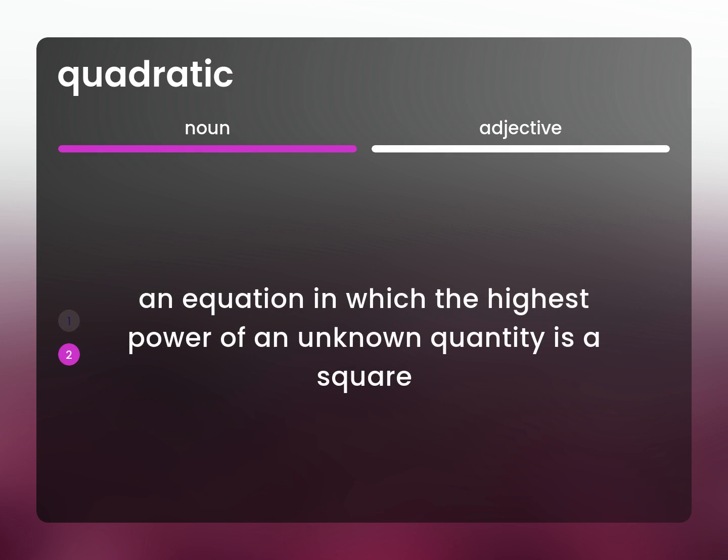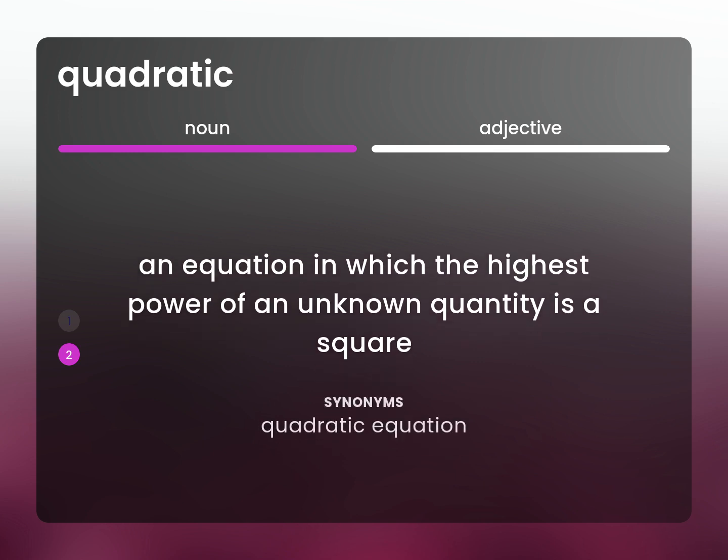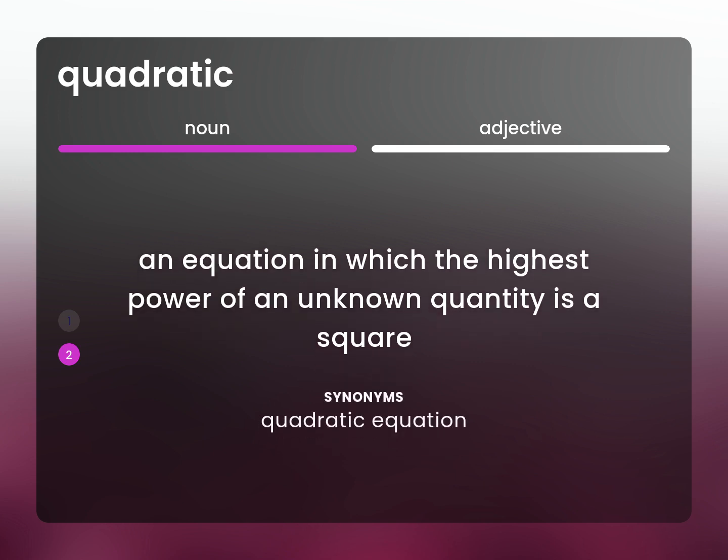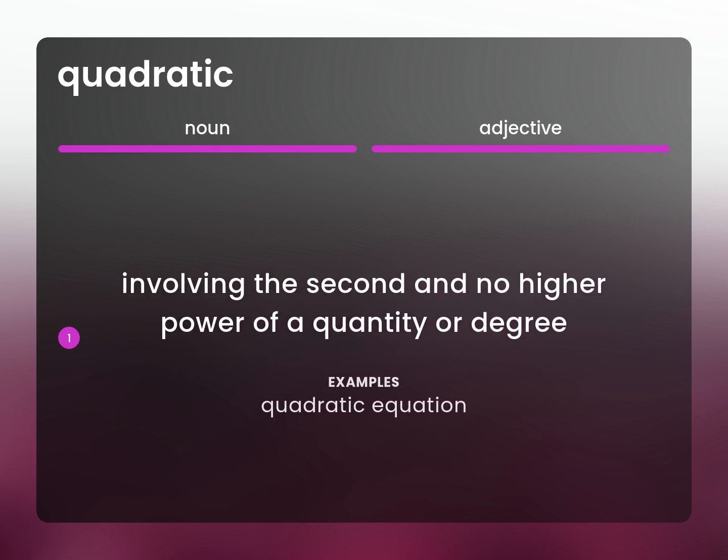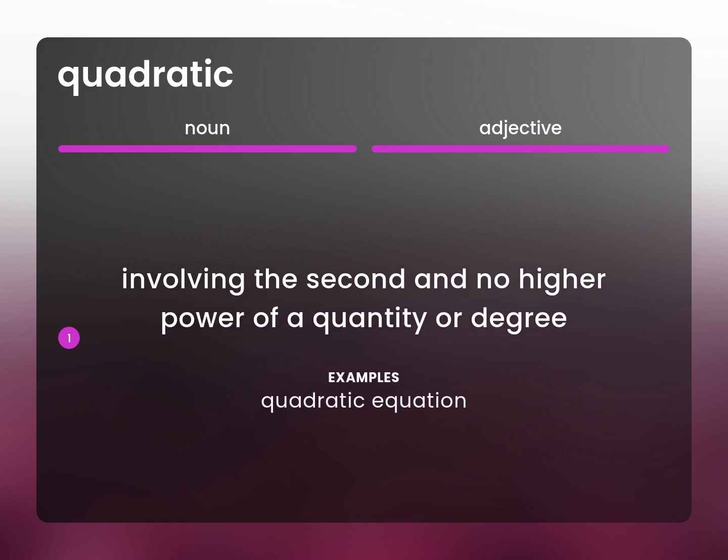An equation in which the highest power of an unknown quantity is a square: quadratic equation. Involving the second and no higher power of a quantity or degree: quadratic equation.